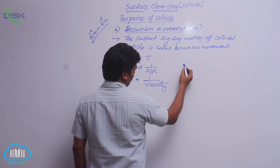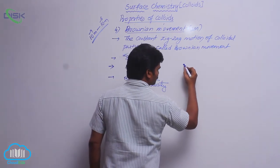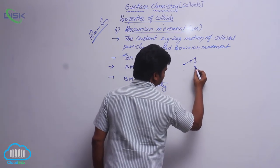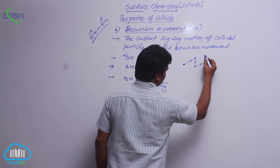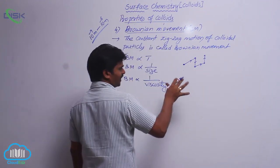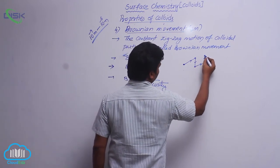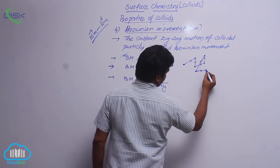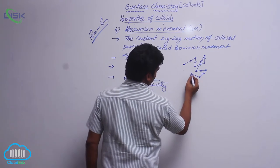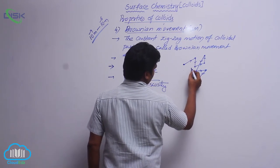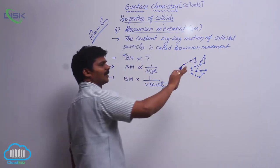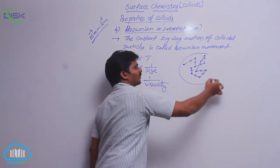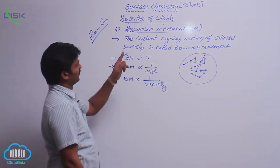A colloidal particle in a colloidal solution moves in one direction, then changes direction continuously — there is no single fixed direction for it. It changes continuously. In this way, a colloidal particle moves in zigzag motion. This zigzag motion of a colloidal particle is called Brownian movement.